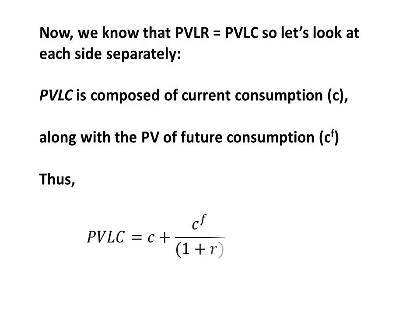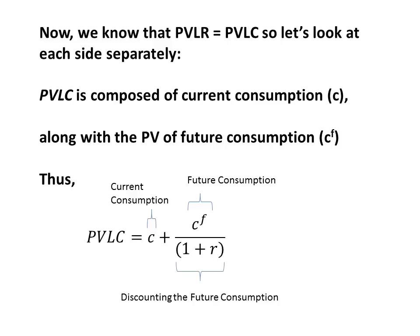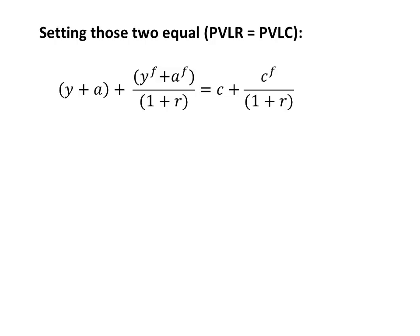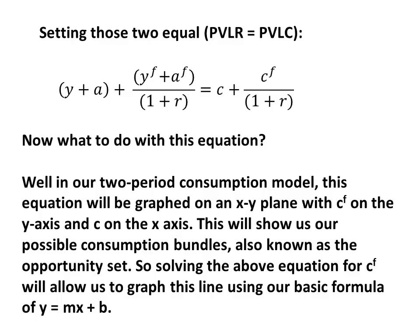PVLC is composed of current consumption along with the present value of future consumption. So PVLC is going to be our current consumption plus our future consumption discounted. Setting those two equal, because we know we're not going to have anything left over, we get: current income and current wealth plus our discounted future income and future wealth has to equal our current consumption plus our future consumption discounted. In our two-period consumption model, this equation is going to be graphed on the XY plane, with CF on the Y-axis and C on the X-axis. This will show us our possible consumption bundles, also known as the opportunity set.